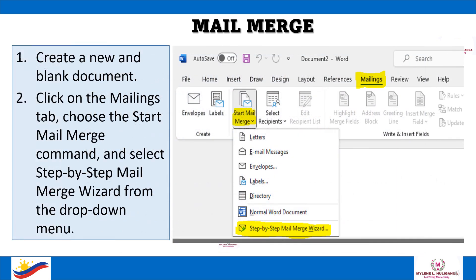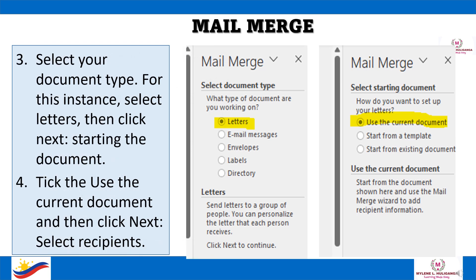How to Insert Mail Merge: First, create a new and blank document. Then, click on the Mailings tab, choose the Start Mail Merge command, and select Step-by-Step Mail Merge Wizard from the drop-down menu. Then, select your document type. For this instance, select Letters, then click Next, starting the document.